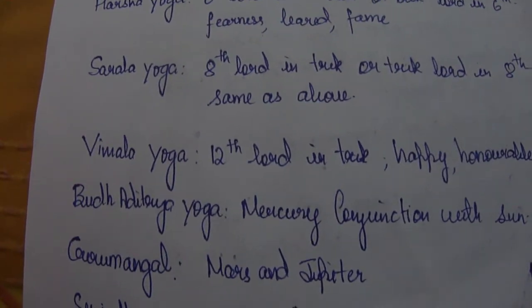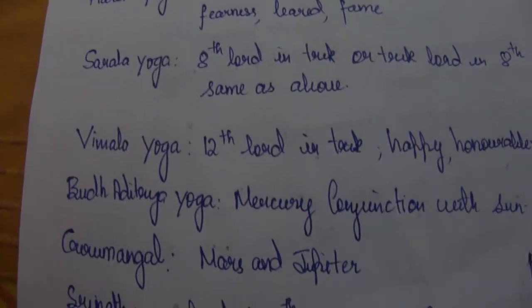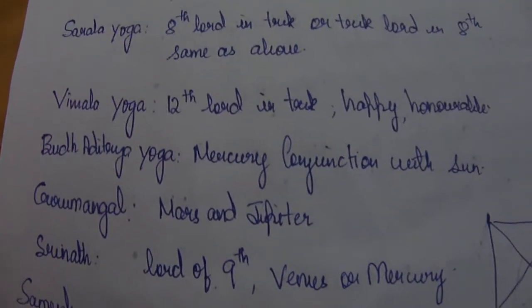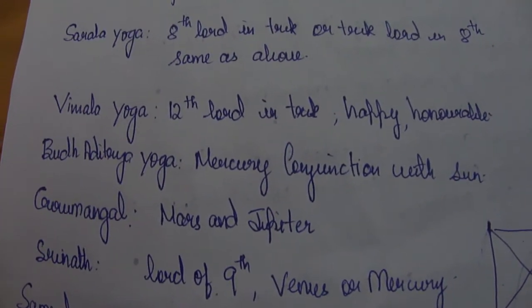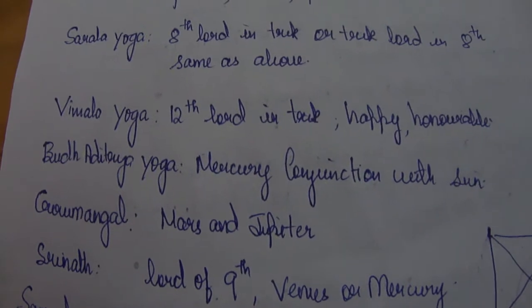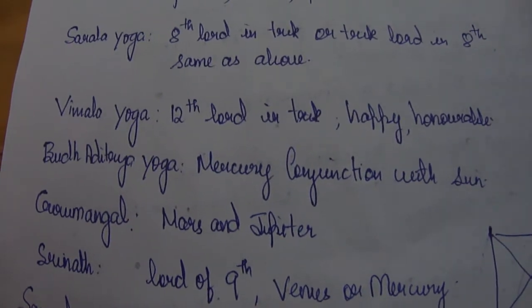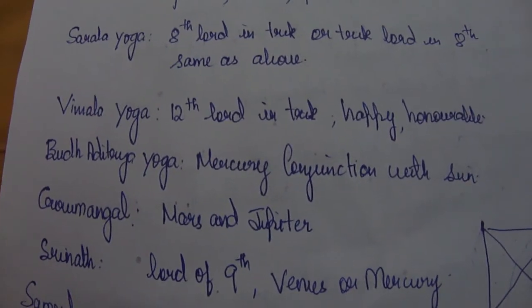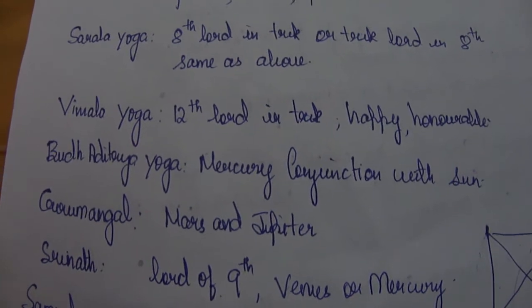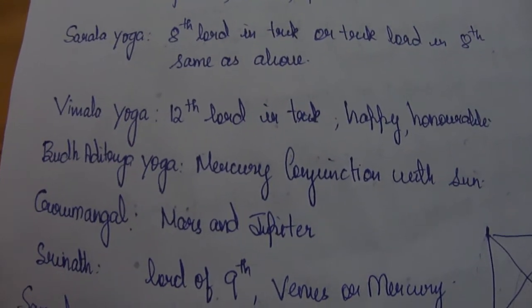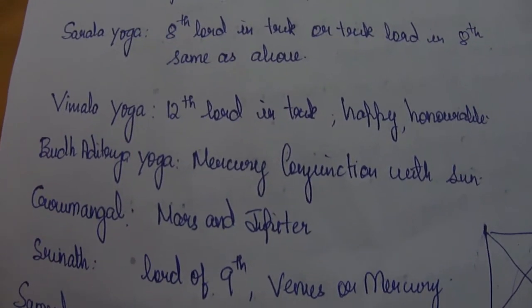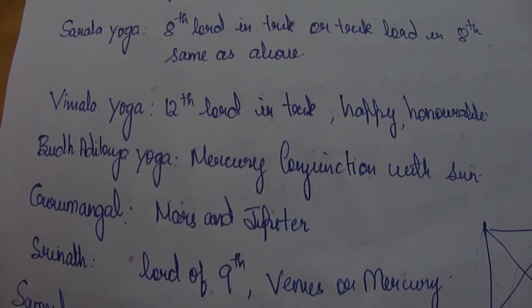There is another important yoga known as Budha Aditya Yoga, which is simply a conjunction of Mercury with the Sun. Whenever Mercury is in conjunction with the Sun, the person becomes brilliant, intelligent, and famous. It is always considered a good combination that gives a good amount of intelligence.